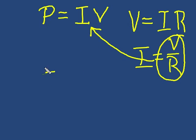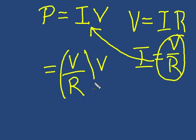And what we are left with then is P is equal to V over R, we've substituted, times V. And that's easy. That equals V squared over R. And so we have power in terms of the voltage and the resistance.